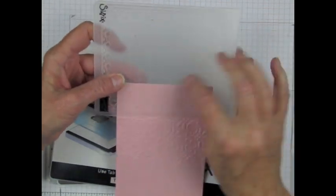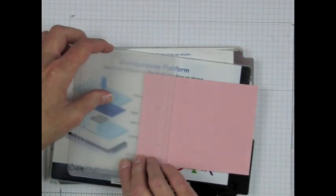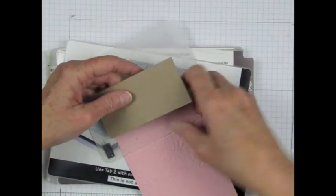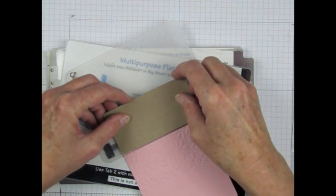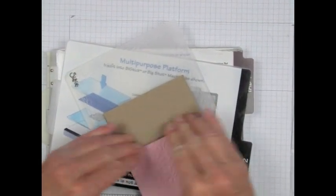Now that I've got that lined up correctly, I'm going to take my shim and place it over the tulips right where I'm going to want the embossing to come through.